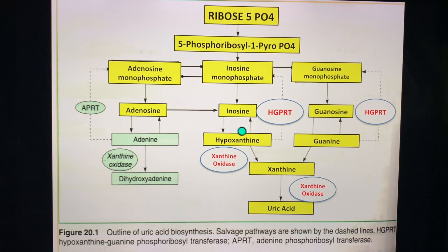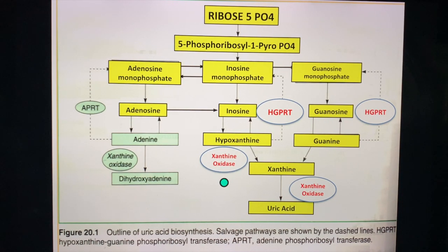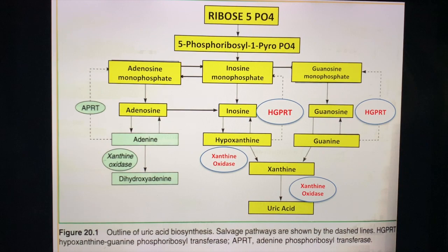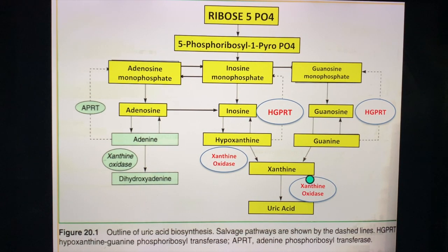Hypoxanthine is also converted to xanthine by xanthine oxidase, which is the last enzyme that converts xanthine to uric acid. Therefore, the rate-limiting enzyme of uric acid synthesis is xanthine oxidase. Two enzymes to memorize for your exams: xanthine oxidase and HGPRTase.